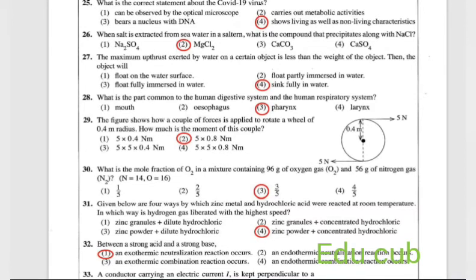Question 28: what is the part common to human digestive system and human respiratory system? Answer is the third one, pharynx.